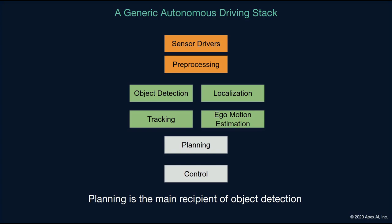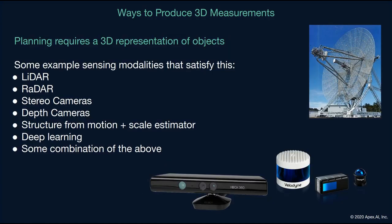The key takeaway from looking at the architecture is that planning is the main recipient of object detection vis-à-vis tracking. We require objects to be detected in three-dimensional space because planning happens more or less in three-dimensional space as well. Therefore, the inputs to the object detection stack must be in three-dimensional space. There are many ways to produce measurements in three-dimensional space, ranging from radars, stereo cameras, and lidars, and some combinations of those sensors. But for the purpose of this class, we'll mostly focus on LiDAR.